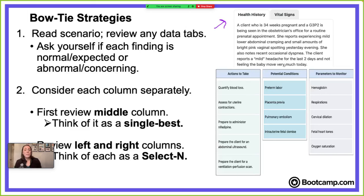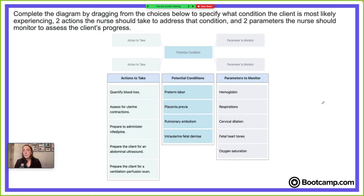Then you're going to look at each column separately. First, determine what potential condition the client is experiencing — approach this as a single best item, picking one answer. Then come over to your actions to take column and pick two actions or interventions, like a select-N. Finally, for the parameters to monitor column, also pick two — another select-N — choosing two assessment options to evaluate how your interventions worked.